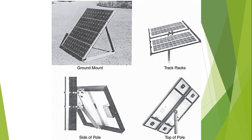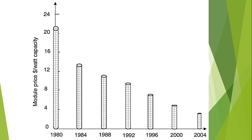There are four basic mounting structures. The first is the ground mount, used to place solar panels on the ground. The second is track racks. The third is the side-of-pole mount, which is used in cities like Rawalpindi to run solar-panel-based traffic signals in case of electricity shortfall.